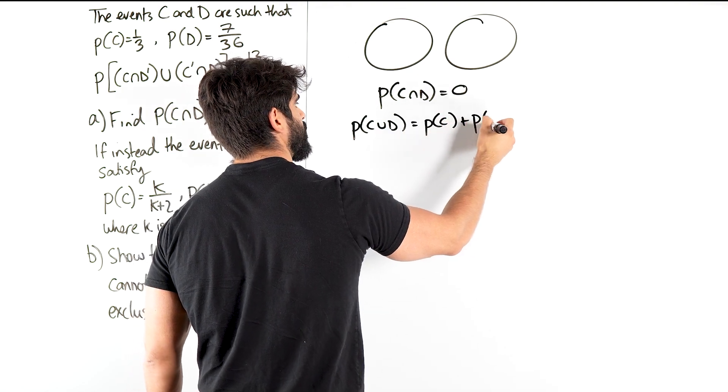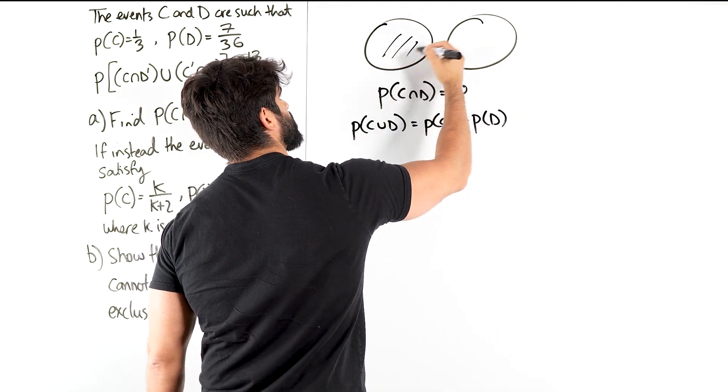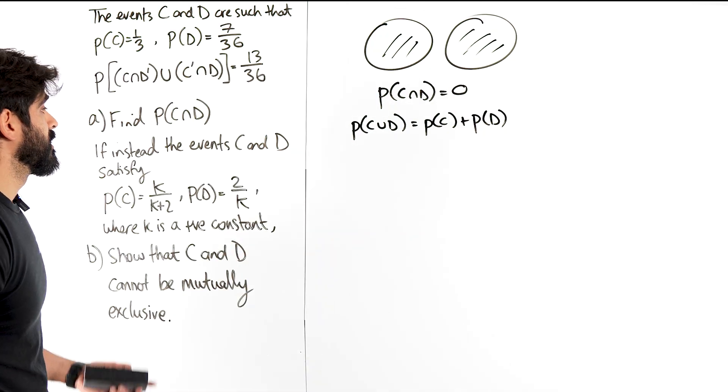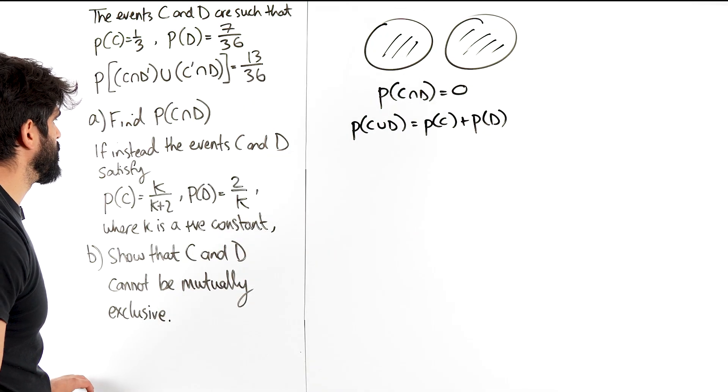There's just no C and D because it's just 0. It's just the probability of C plus the probability of D, you know, which is adding these up. So I guess that's what we need to do and show that that's not possible somehow.